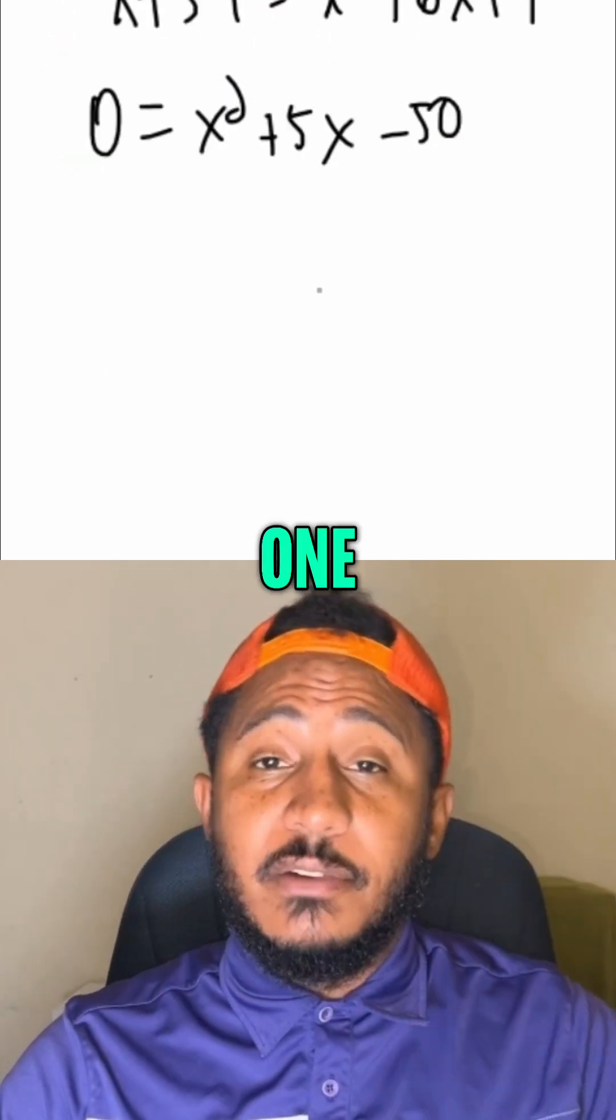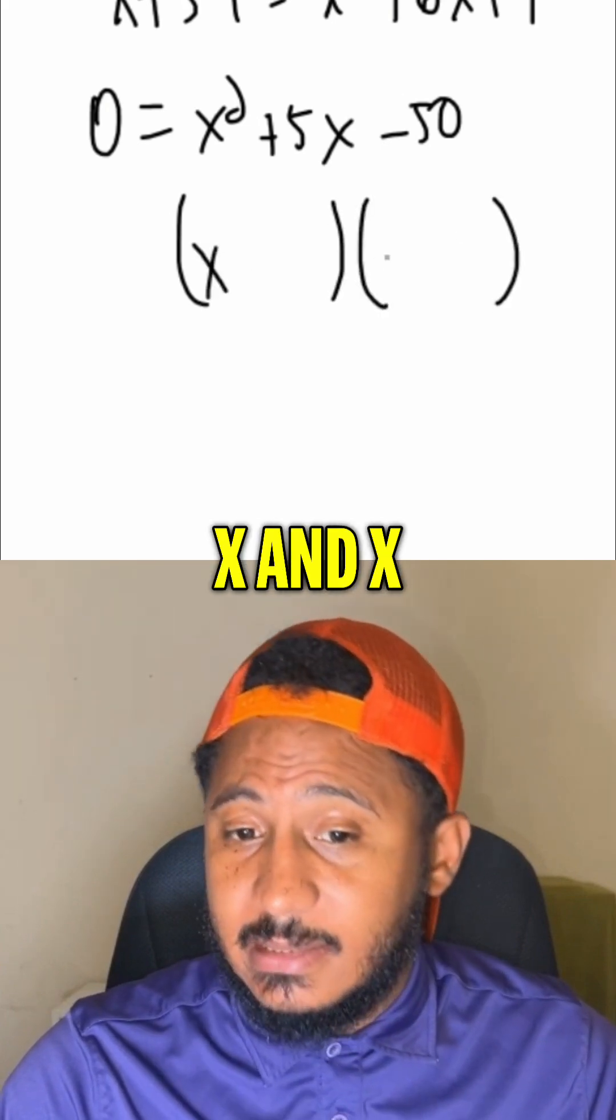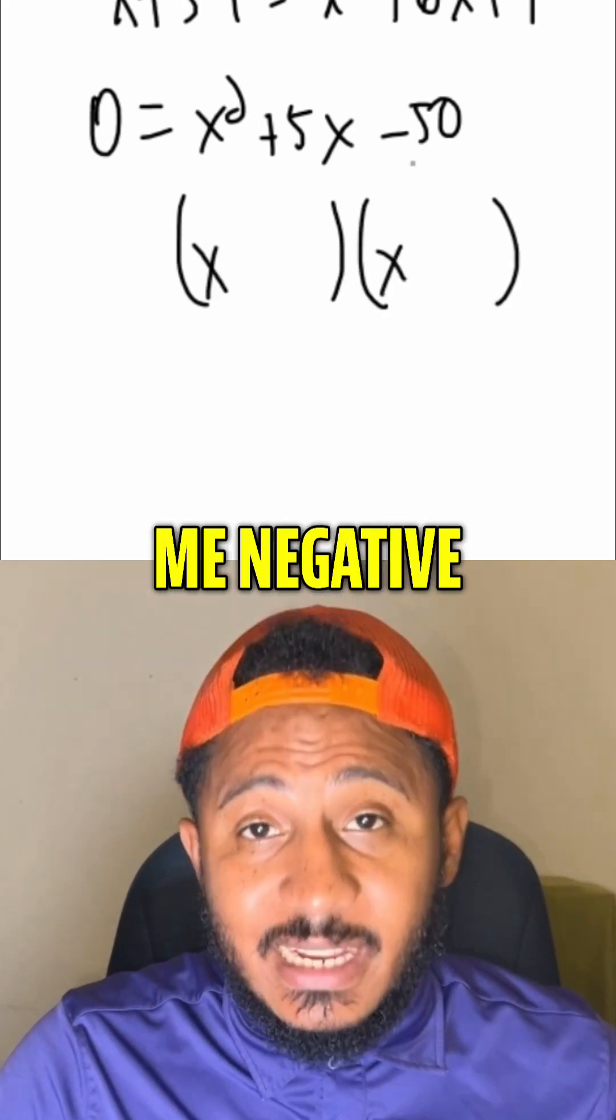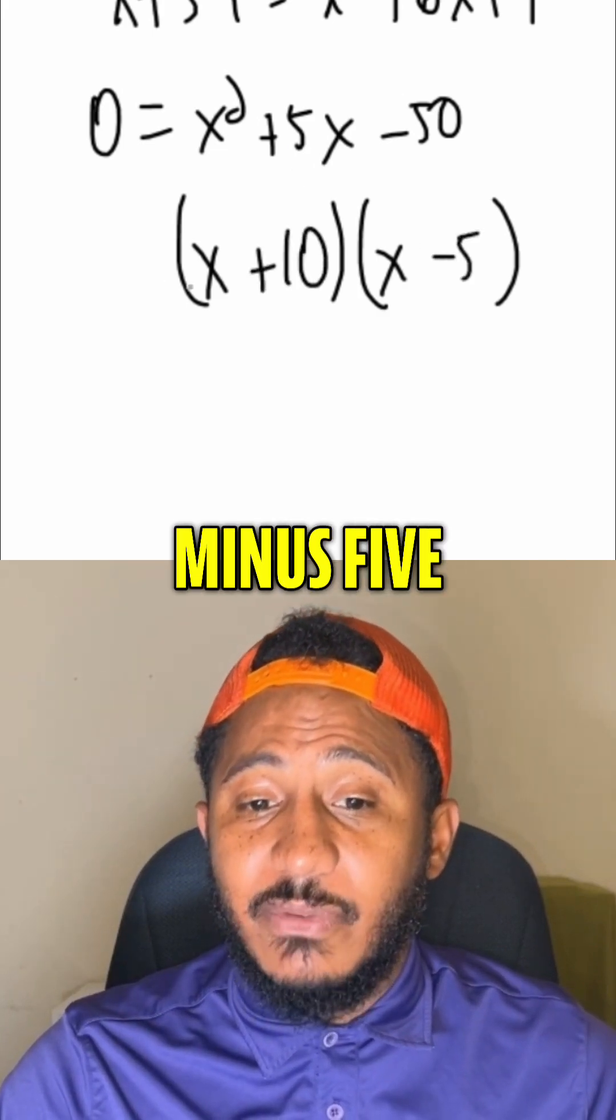So since the right-hand side is three terms, and there's a one in front, we go straight to double bubble, x and x. Now we need numbers that multiply, give me negative 50, combine to give me this positive 5. So in this case, it would be plus 10 and minus 5.